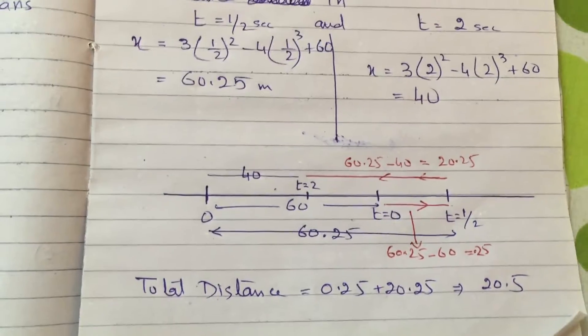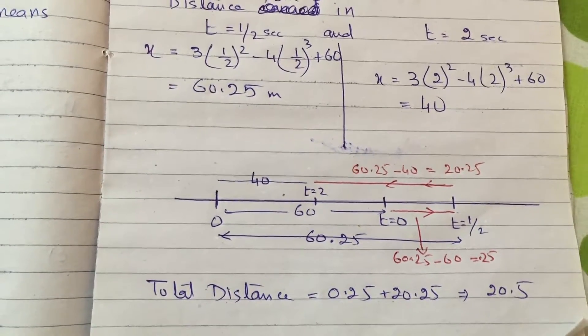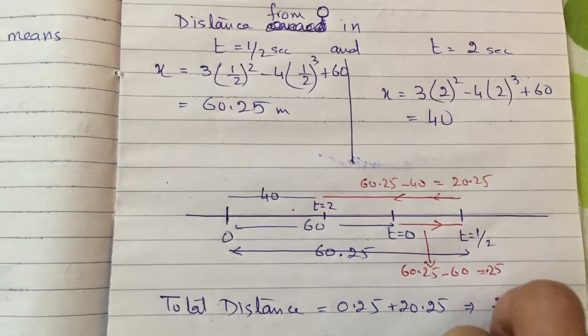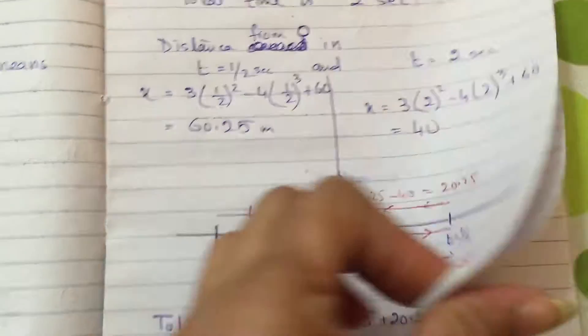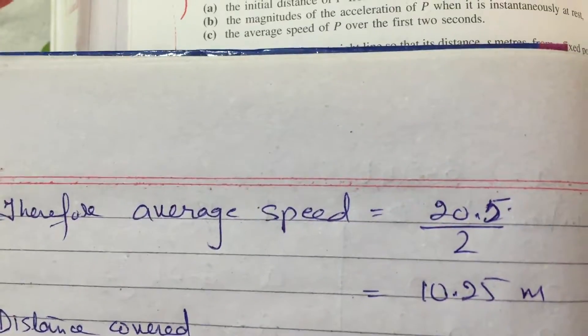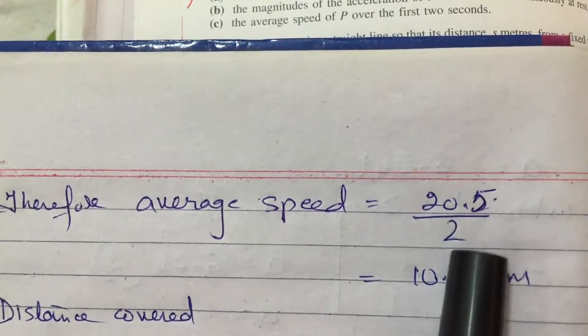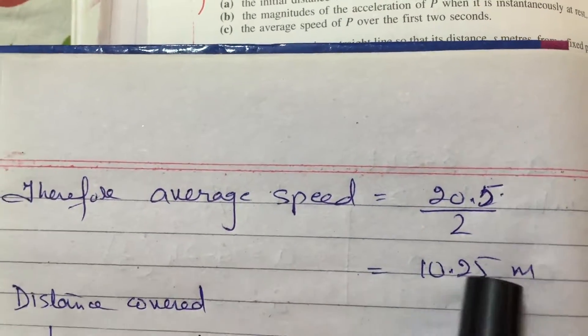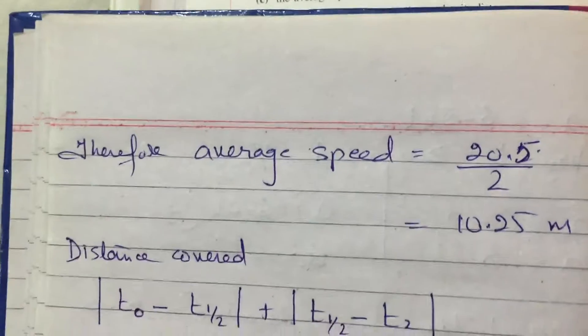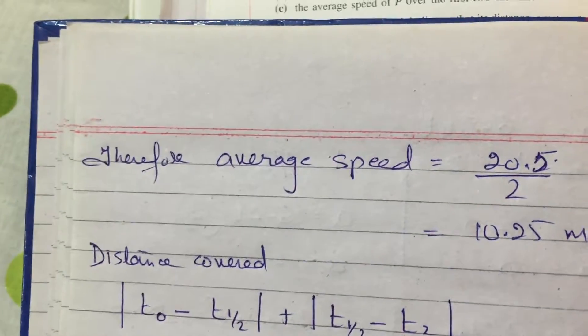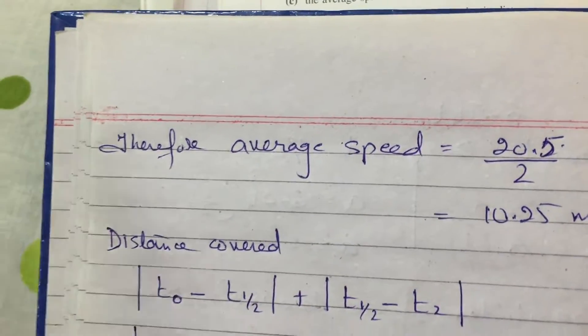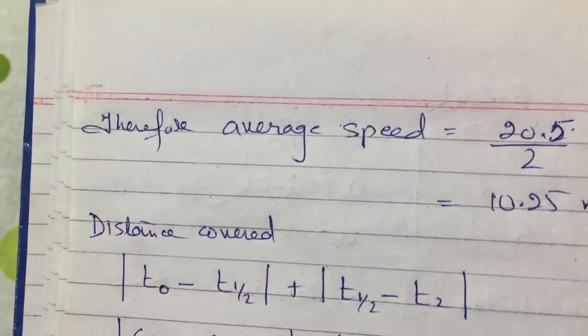So total distance is 0.25 meters plus 20.25, which is 20.5 meters. So average speed equals 20.5 divided by 2, which is 10.25 meters. But now this method of calculating becomes tedious when the object is taking twice the turn or 3 times, which at times happens.